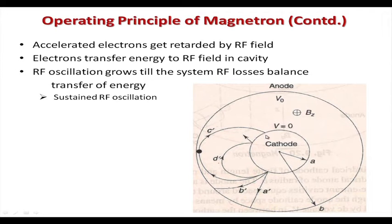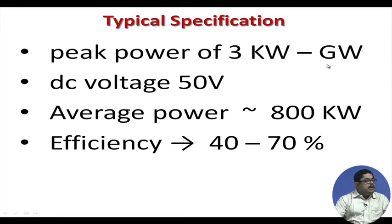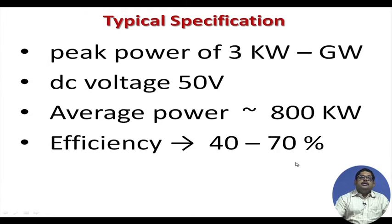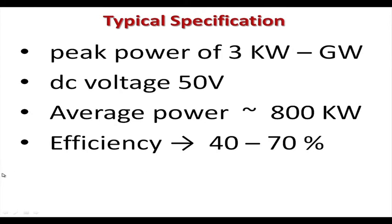Finally, the cathode collects the electrons it has emitted, completing the circuit. Typical specifications: peak power from 3 kilowatts to several gigawatts, DC voltage around 50 volts DC, average power up to 800 kilowatts, and efficiency higher than reflex klystron at 40 to 70 percent. The problem, however, is that the phase stability of the produced signal is not good, whereas the reflex klystron has good stability.